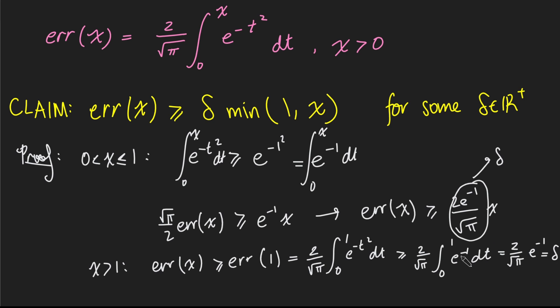So either way, if x is bigger than 1, error of x is bigger than delta. If x is less than 1, error of x is bigger than or equal to delta times x. And that proves this claim here. And that is the end of our proof.